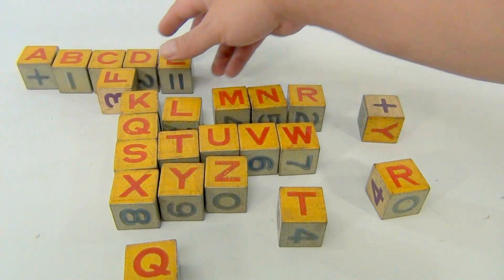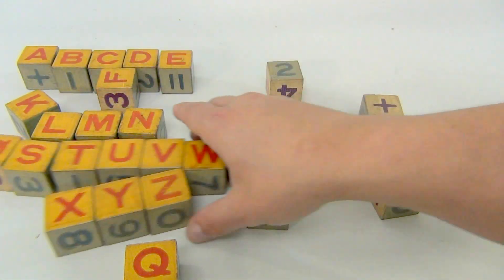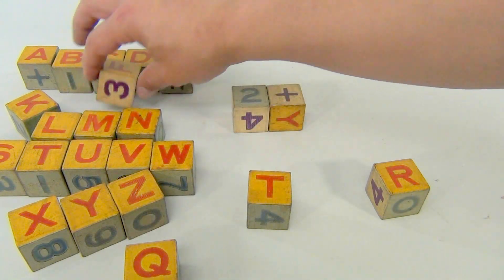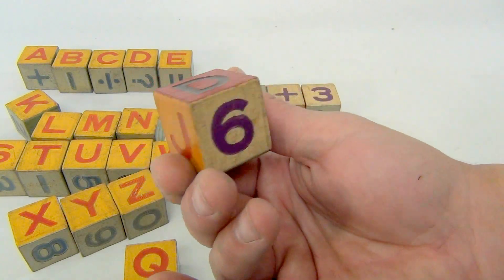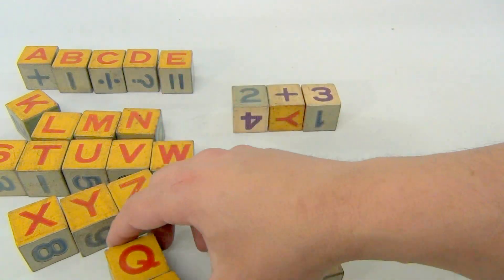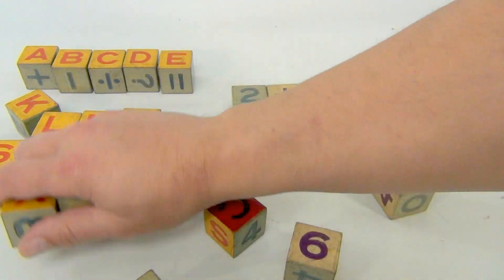So you can do equations, mathematical facts. Two plus three, and then let's see, now some don't have any mathematical facts on it, just numbers.